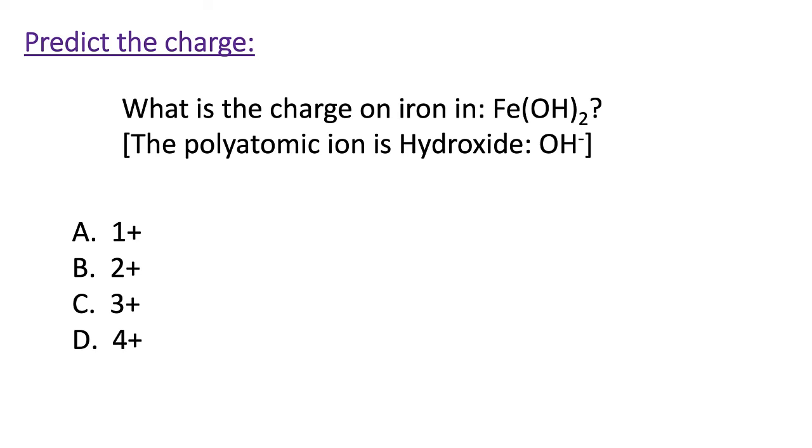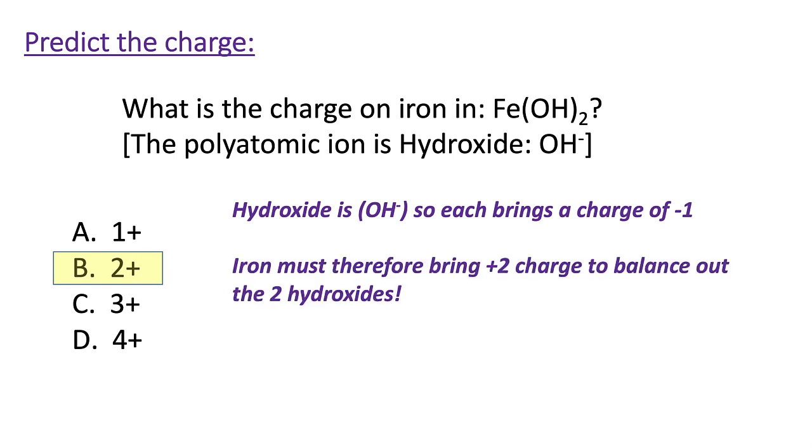Let's take a look at a similar example where we have iron hydroxide, Fe(OH)2, indicating that we have OH, which is a polyatomic ion called hydroxide, and its identity is OH minus, bringing a charge of minus one. So based on this chemical formula, what is the charge on iron? Go ahead and pause the video. With our iron hydroxide, Fe(OH)2, we know that hydroxide is a charge of minus one. That's part of the hydroxide identity. Therefore, iron is going to have a charge of two plus. Each hydroxide brings a charge of minus one. Therefore, iron must bring a charge of two plus in order to balance out these hydroxides. Finally, we could name this compound and call it iron two hydroxide.